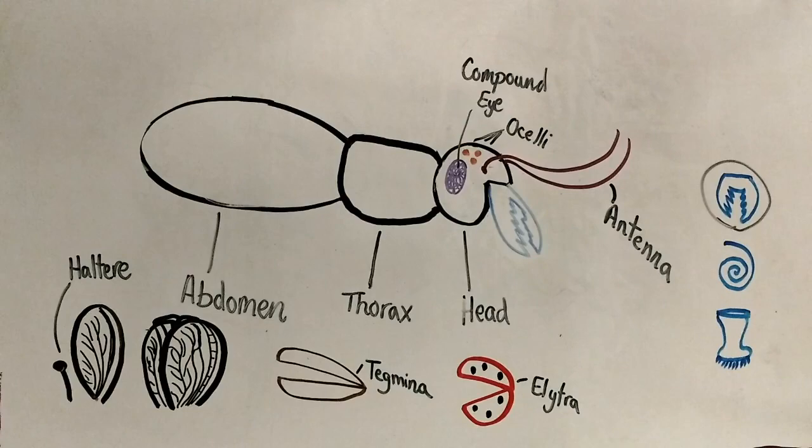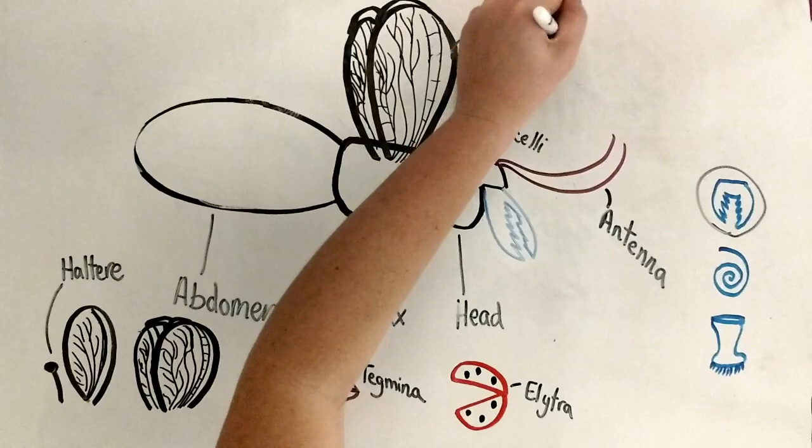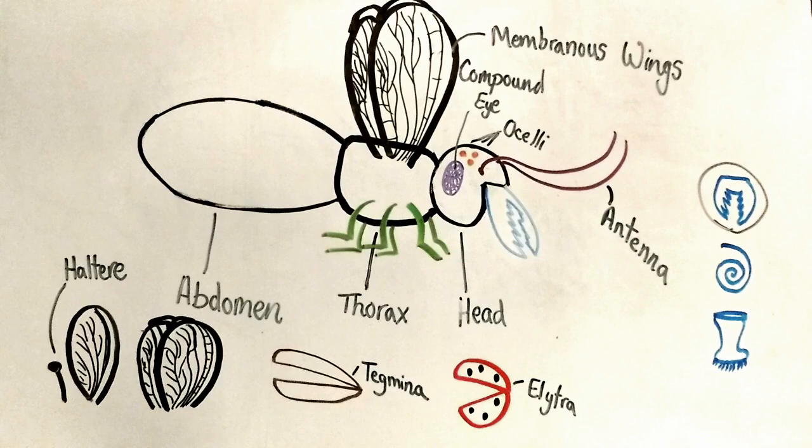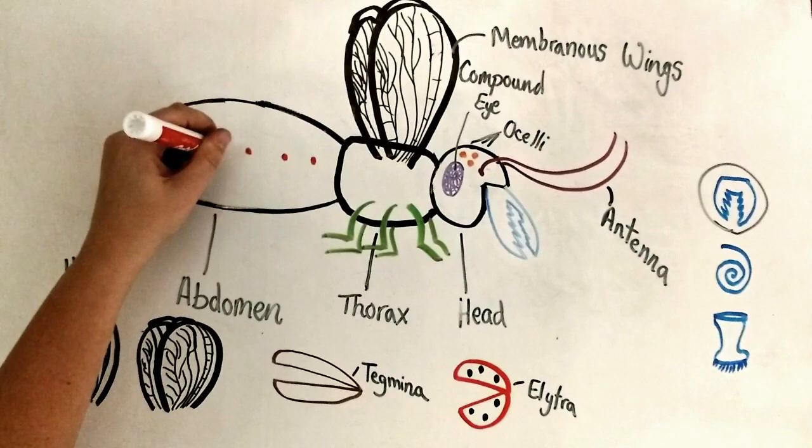There aren't very many things attached to the outside of the abdomen because most of the exciting things are happening inside of it. The respiratory system, digestive tract, and the reproductive organs are all in the abdomen. Insects actually breathe through window-like holes in their abdomen called spiracles.